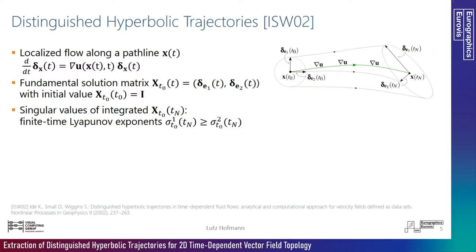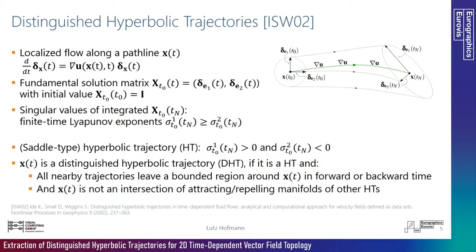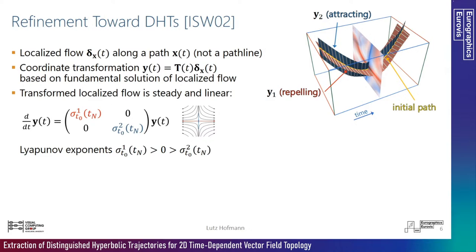A proper definition of a hyperbolic trajectory is given by Ide and colleagues, who consider the localized flow defined by the Jacobian along a pathline. The fundamental solution matrix has finite-time Lyapunov exponents as singular values. A hyperbolic trajectory has one positive and one negative Lyapunov exponent. Distinguished hyperbolic trajectories (DHTs), which generate the time-dependent topology, require two additional conditions: all nearby trajectories must leave a bounded region in either forward or backward time, and the trajectory must not be an intersection of attracting or repelling manifolds of other hyperbolic trajectories — the latter manifests as false positive FTLE-ridge intersections.